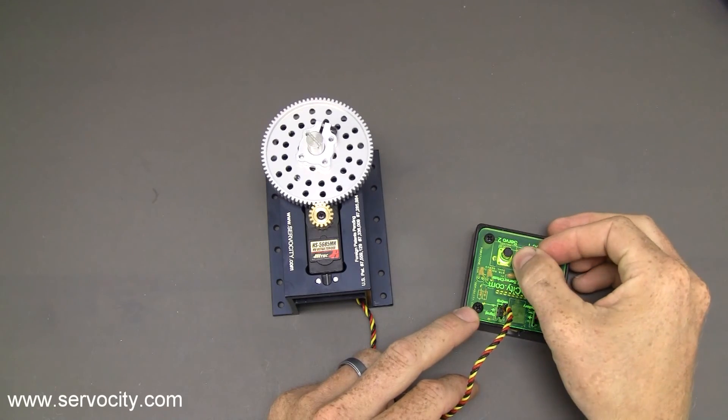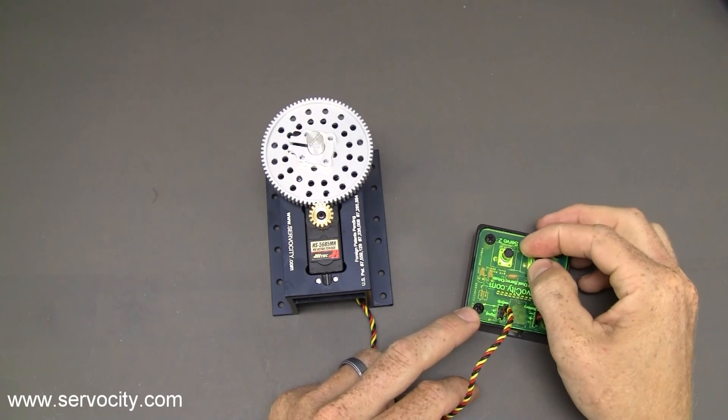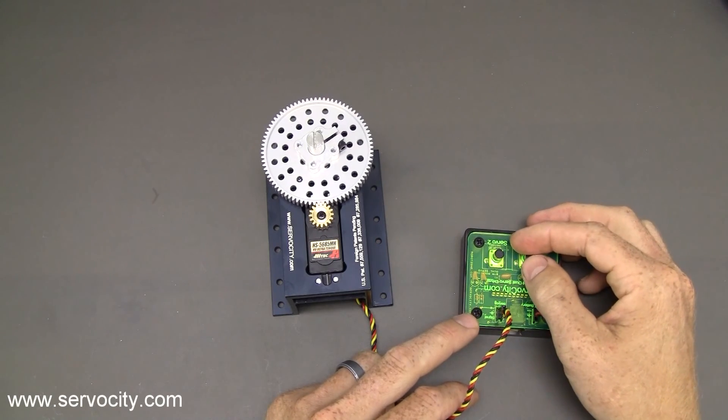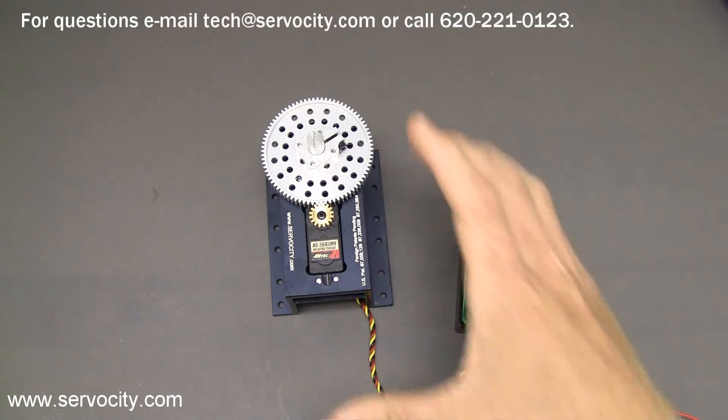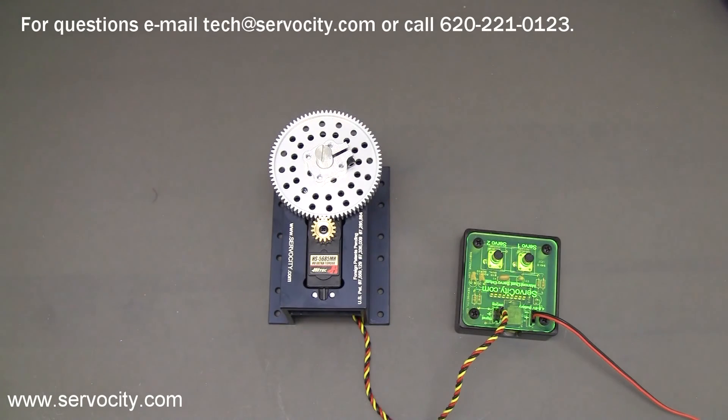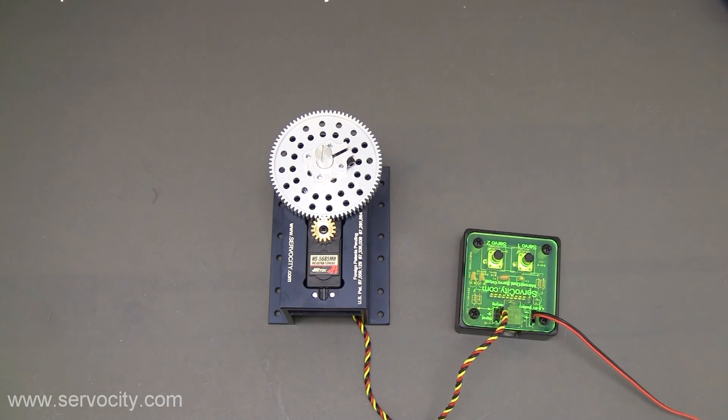So we didn't damage the servo or the potentiometer. But I did want to show you guys that in case when you get your servo power gearbox, if you rotate it by hand, you might be outside of that usable range. So you might try rotating it back the other way a little bit and plugging it in to see if it'll work.